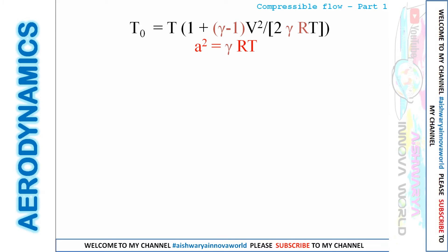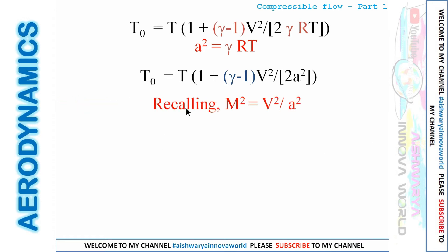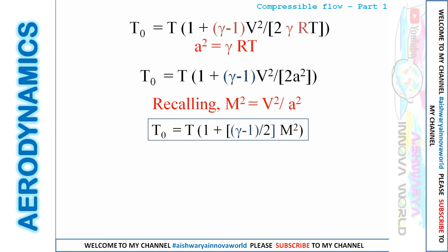Recalling a² = γRT (speed of sound equation), substituting into the rearranged energy equation and applying M² = V²/a², we get T₀ equals T times [1 + (γ − 1)/2 · M²]. So the isentropic stagnation-to-static temperature ratio is: T₀/T = 1 + (γ − 1)/2 · M².